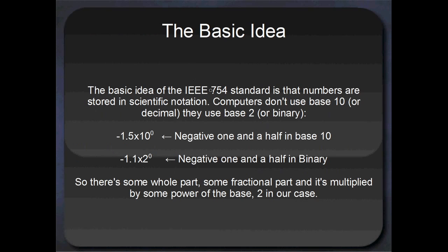The basic idea of IEEE 754 standard is that numbers are stored in scientific notation. Computers don't use base 10, they use binary or base 2. But scientific notation, you can write it in either base. So something like negative 1.5 multiplied by 10 to the power of zero, that's called scientific notation. We'd read that as negative 1.5 in base 10. Likewise, we could write exactly the same number in binary: negative 1.1 by 2 to the power of zero. That's negative 1.5 in binary.